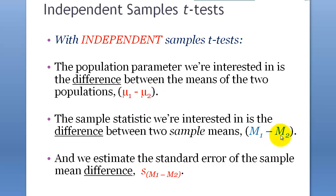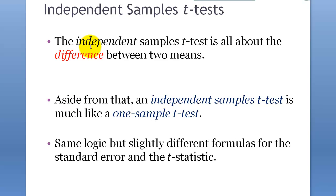This is very important to understand — the initial setup. The independent samples t-test is all about the difference between two means. Earlier it was about just one sample mean versus one population mean. But now it's about the difference between two means. We replace population mean with the difference between two population means, sample mean with the difference between two sample means, and standard error of the means with the standard error of the difference between two means.